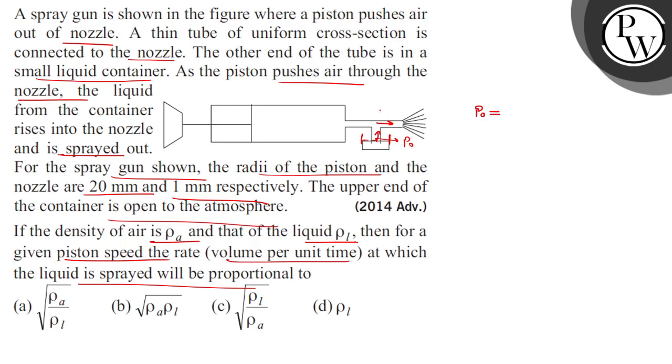At this point where the liquid is supposed to have velocity v_l, so it will be half rho v_l squared plus the pressure here.